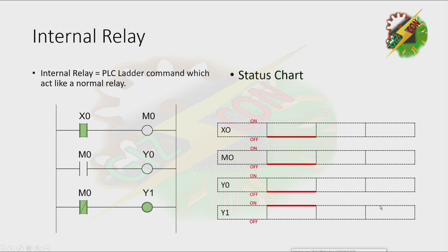But when we energize X0, M0 will be on, and that will make all the contacts of M0 change. If M0 is normally open, it will close; and if M0 is normally closed, it will open. And this will cause Y0 to turn on and Y1 to turn off.